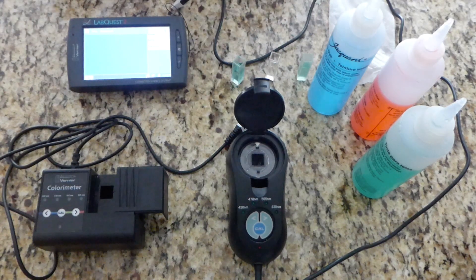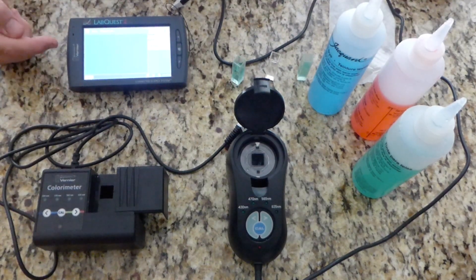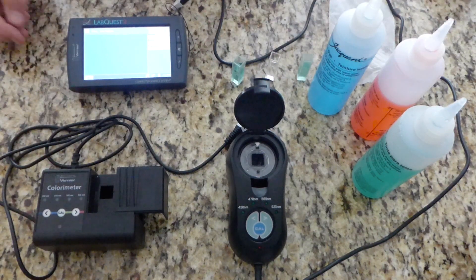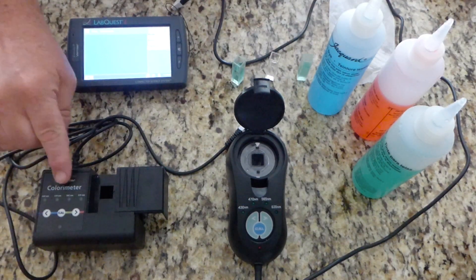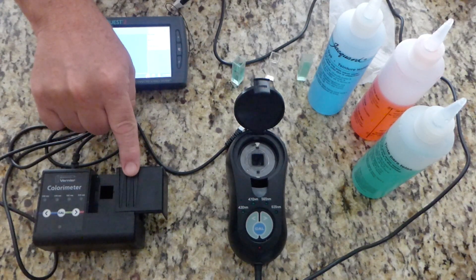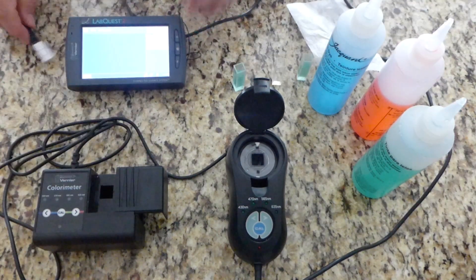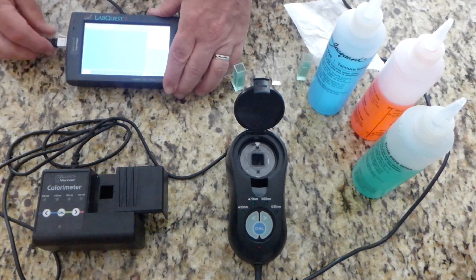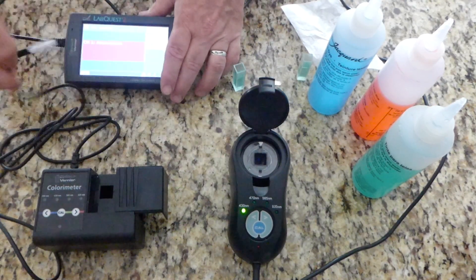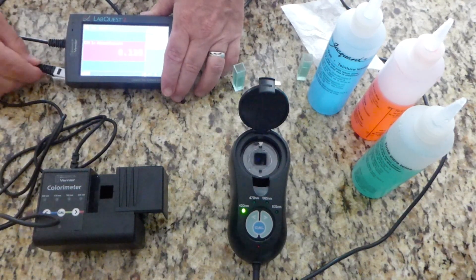Here you have a Vernier LabQuest and two different types of colorimeters. Both of them have a space to put a cuvette in. They both have four different wavelengths that they read at, a calibration button, and two selection buttons. To connect them, plug the cables in the side, and the machine automatically recognizes what you've plugged in.